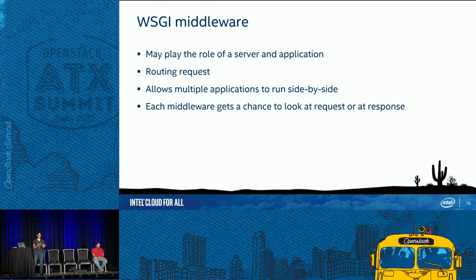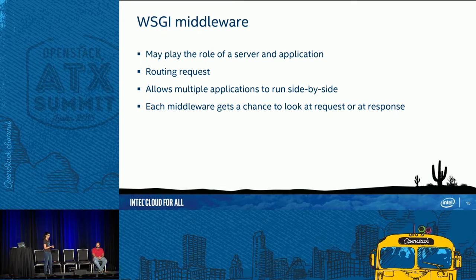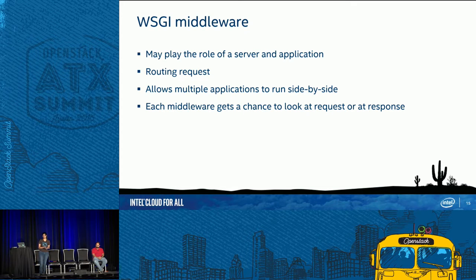What is a middleware? Middleware can act as a server or an application. If a middleware is wrapping another middleware, the outer one acts as a server and the inner one acts as an application. Whatever a middleware wraps can itself be a middleware or an application — that's what we call a middleware stack. Common uses include routing a request based on URL by modifying environment variables, or load balancing by passing requests from one network to another. When a request or response is passed, a middleware gets a chance to look at it and modify it if required.